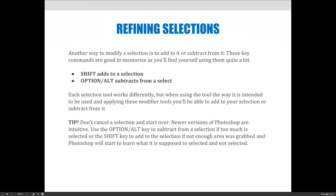Making a brush bigger or smaller with your right and left bracket keys is one I'd memorize. I would also memorize that Shift adds to a selection, and Option — or Alt if you're on a PC — subtracts from a selection, because you will be making selections for everything you do in Photoshop if you're doing it right.